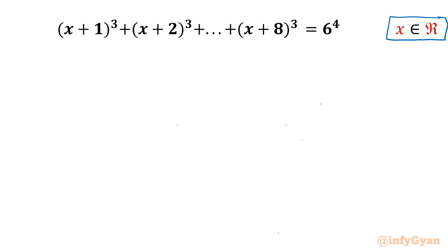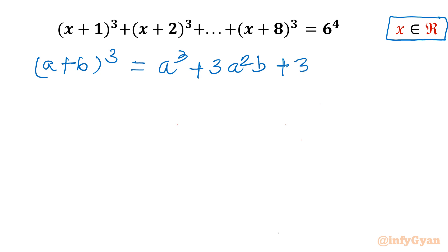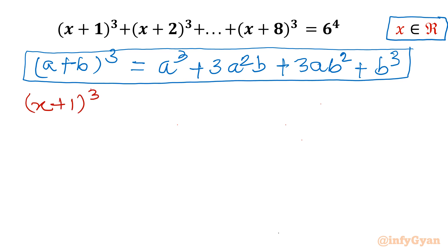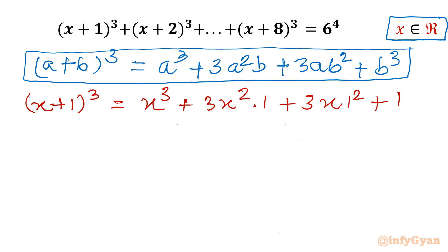Let's get started by writing one powerful algebraic identity: (a+b)³ = a³ + 3a²b + 3ab² + b³. We will use this identity without substitution. For example, (x+1)³ expands as x³ + 3x²·1 + 3x·1² + 1³, with a=x and b=1.